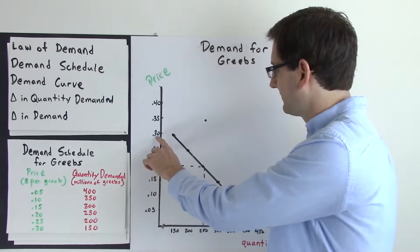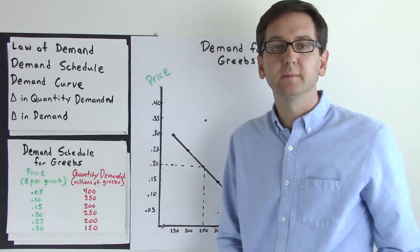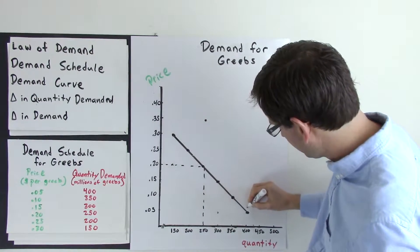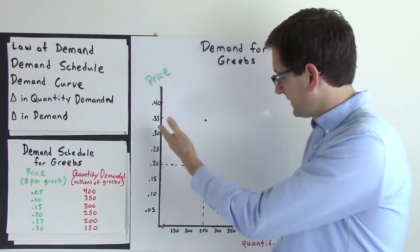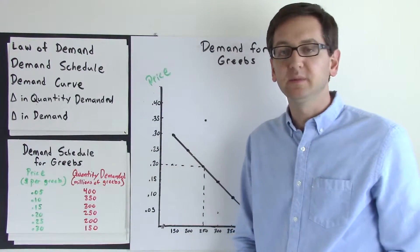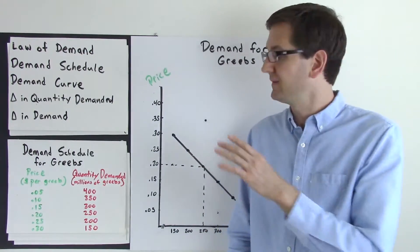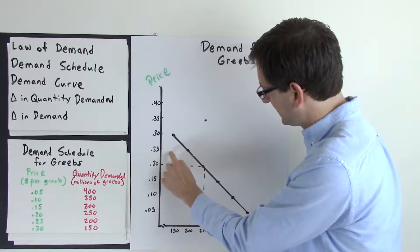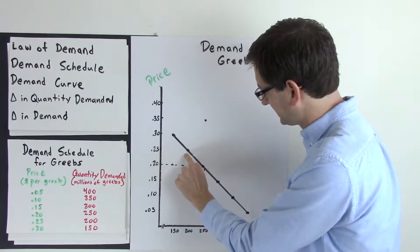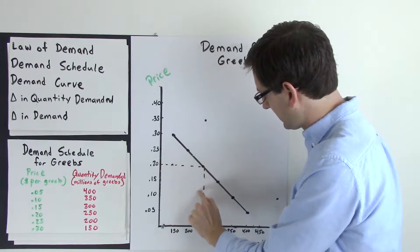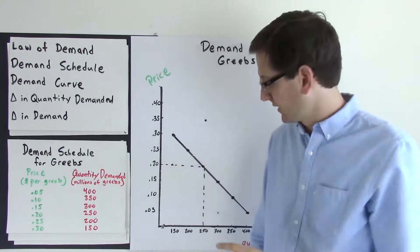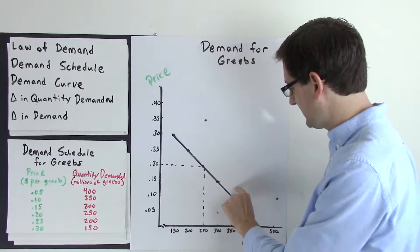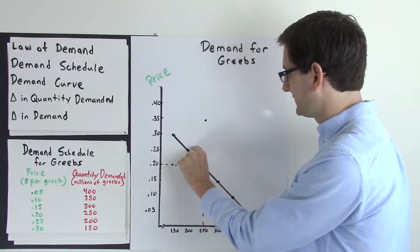At 30 cents it's 150 million. Now we just connect those data points using a line or a curve, and that creates our demand curve for Grebes. This also shows the law of demand: as price decreases, the quantity demanded increases all along this curve, and as price increases, the quantity demanded decreases all along this curve.